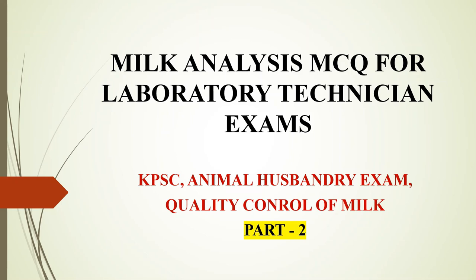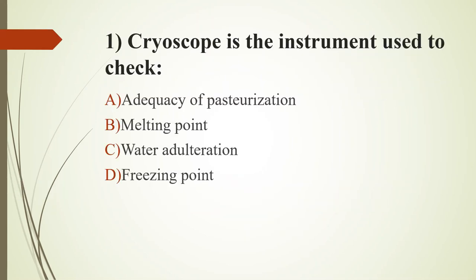First question: the cryoscope is the instrument used to check — option A, adequacy of pasteurization; option B, melting point; option C, water adulteration; option D, freezing point. The answer is option D, freezing point of milk.